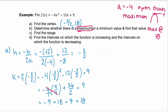Part c wants us to find the range. Remember range equals your y values. Since our graph opens down, y values only go smaller than 18 — 18 is our largest value. We put a bracket at 18 because we reach that point, and y values go toward negative infinity. So our range is (-∞, 18].